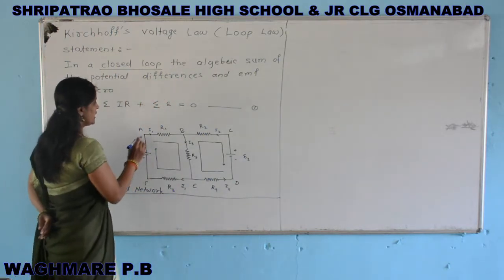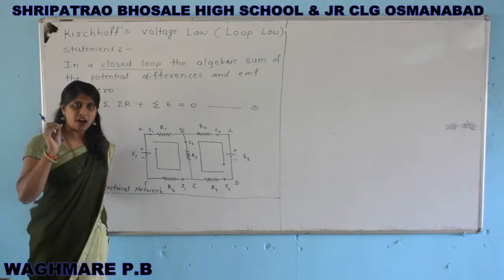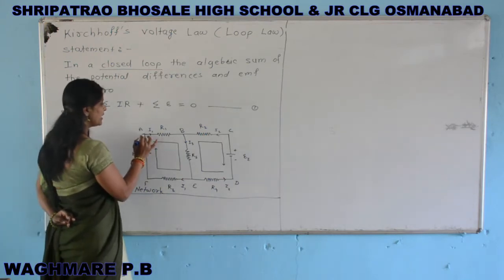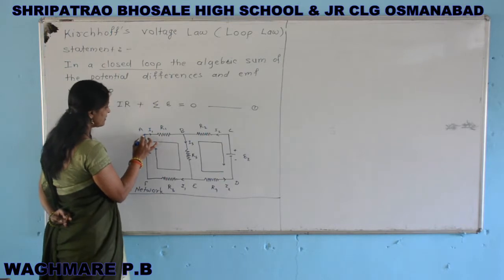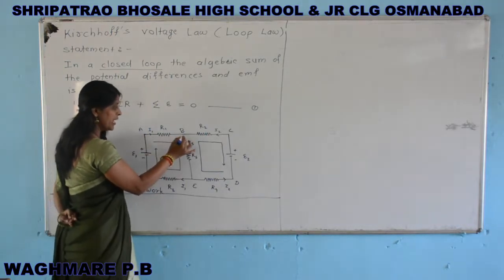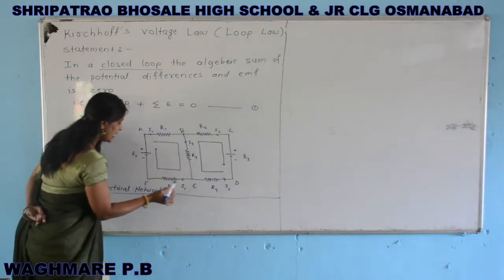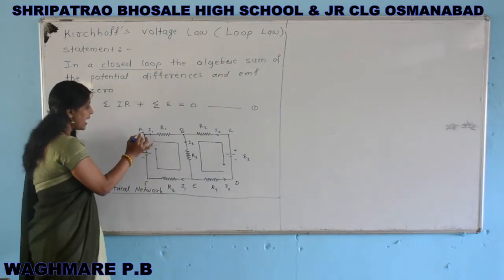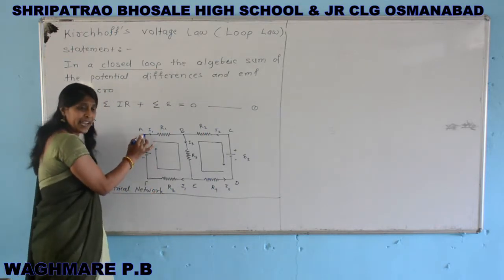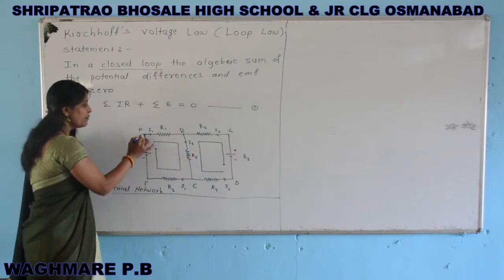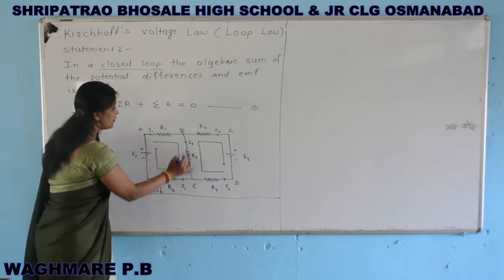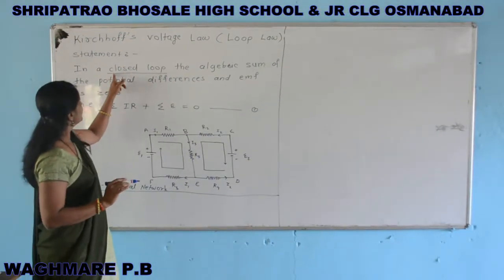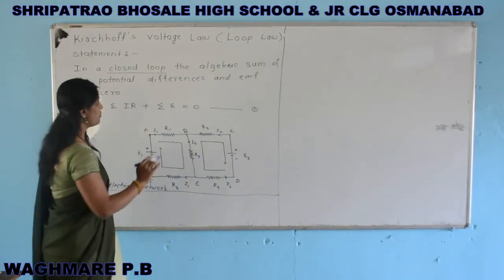Closed loop means the starting point and end point of our considered path are the same. Suppose we consider a path from point A to B, B to E, E to F, and F to A. The starting point is A and the end point is also A. Therefore this loop follows a closed loop, and in this law the closed loop concept is important.